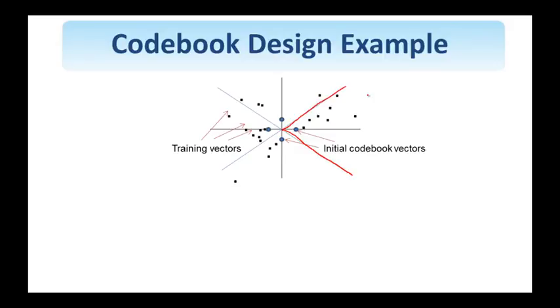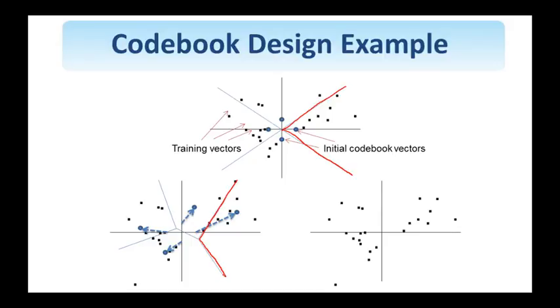By the way, if the underlying distribution is uniform, then the centroid is just the average of the vectors belonging to a partition. If the PDF is known, then it's taken into account in finding the centroid. So, again, these are the training vectors, and these are the new centroids for these four regions. We apply, again, the nearest neighbor condition, and we obtain this partitioning of the space. So, the initial codebook vectors moved according to these vectors. For each of these partitions, again, such as this one, we are going to find the centroid.